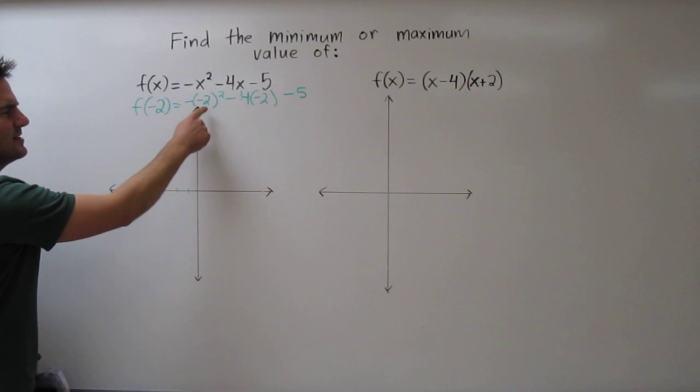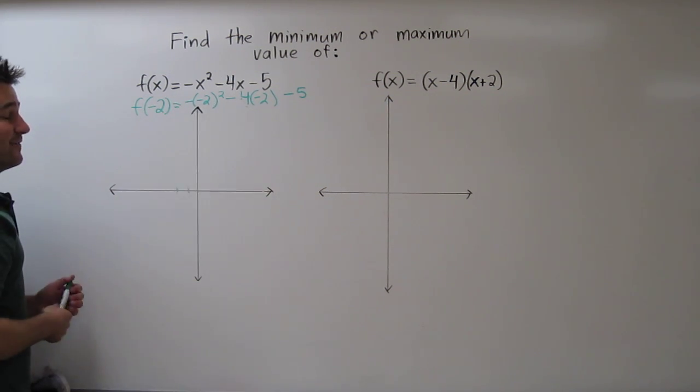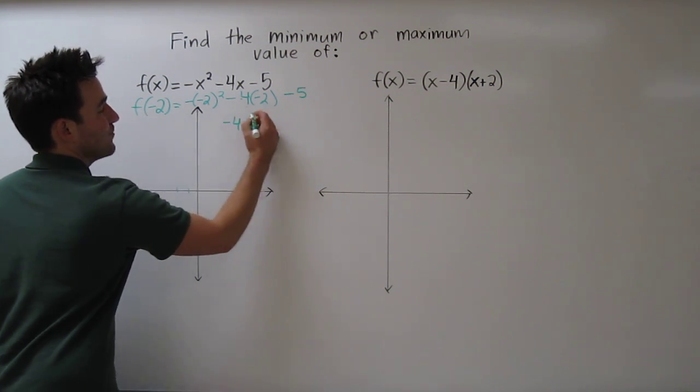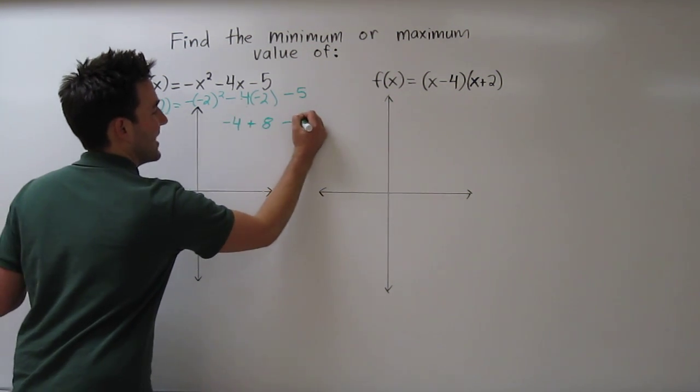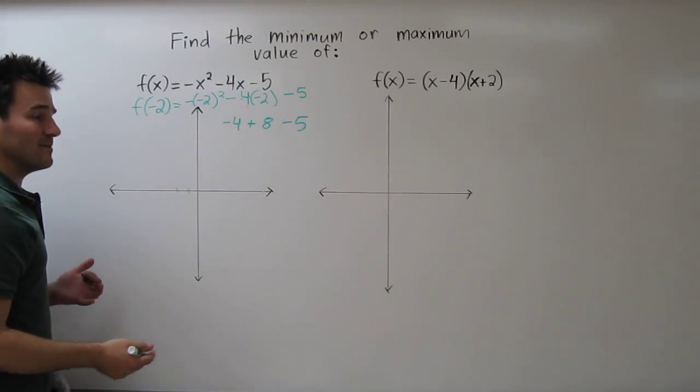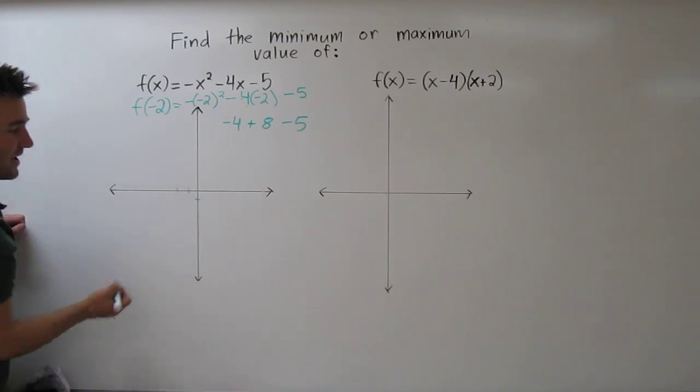f of negative 2 is... Well, negative 2 squared is 4. Times negative is negative 4. So we get negative 4 plus 8 minus 5. Well, negative 4 plus 8 is 4. Minus 5 brings us to negative 1. So that's our y-coordinate of the vertex.